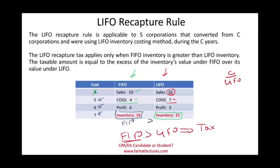Why do you have to pay this tax? Here's the reason. You have a hidden profit — your inventory is $3 more under FIFO than under LIFO. As a result, you have $3 of unrealized gain sitting in your inventory. The government says: if you want to switch from C to S, we want you to accelerate — recognize this unrealized gain now. The difference is $3, so you have to book it now and pay taxes on that $3. Once you pay the taxes, the $3 is added to your inventory.